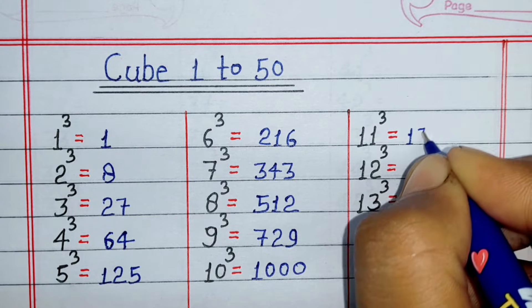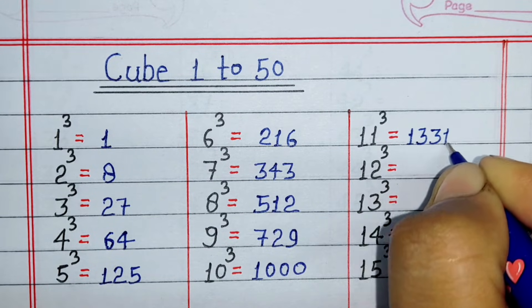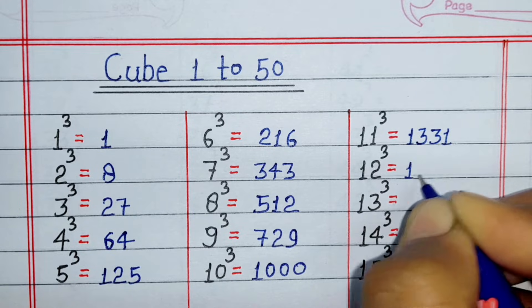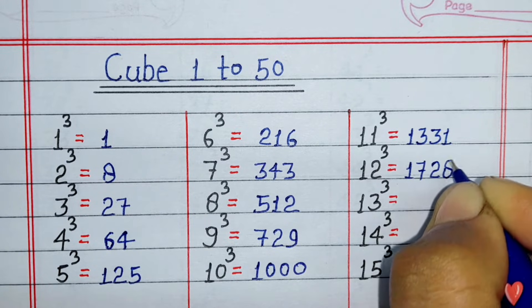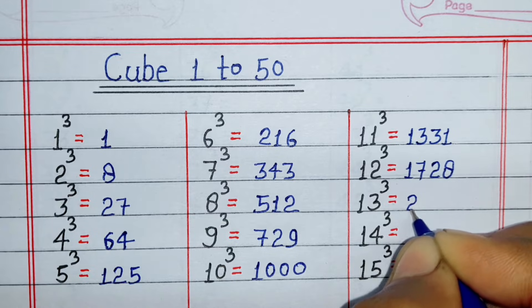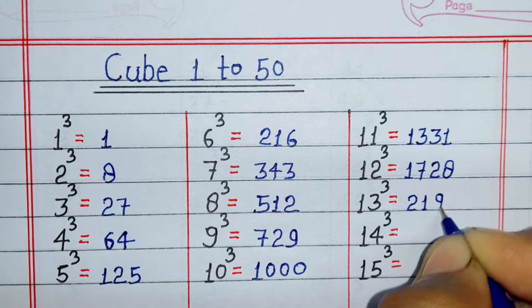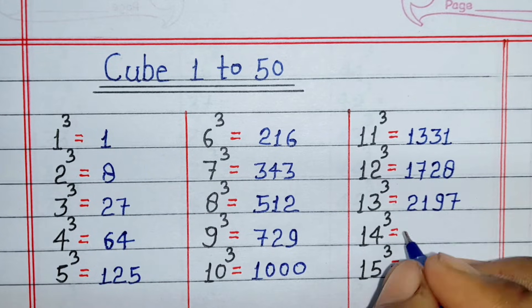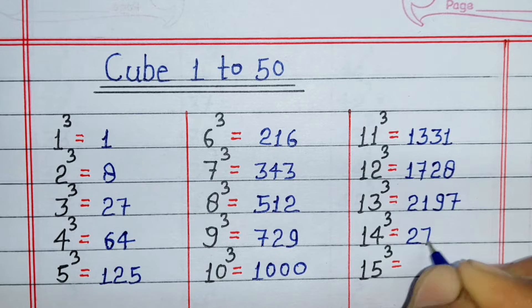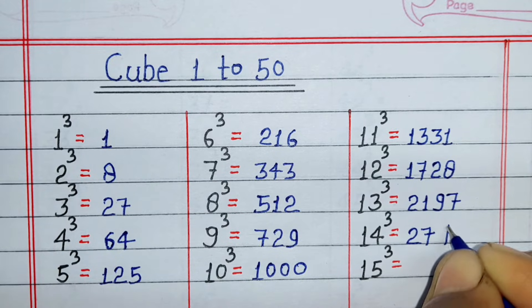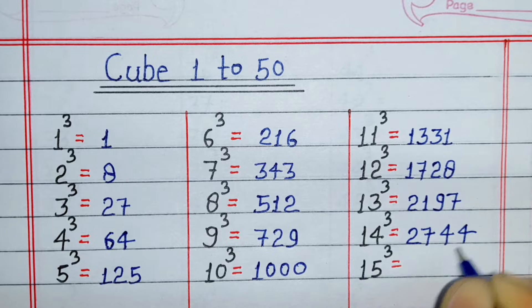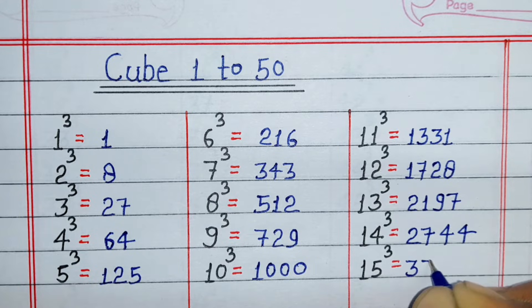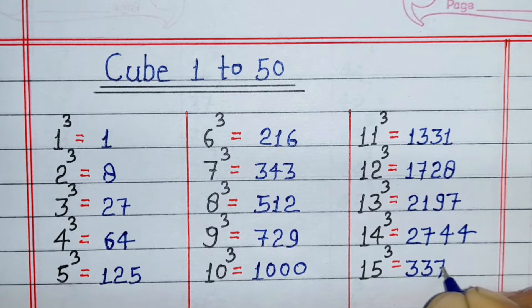Cube of 11 is 1331, cube of 12 is 1728, cube of 13 is 2197, cube of 14 is 2744, cube of 15 is 3375.